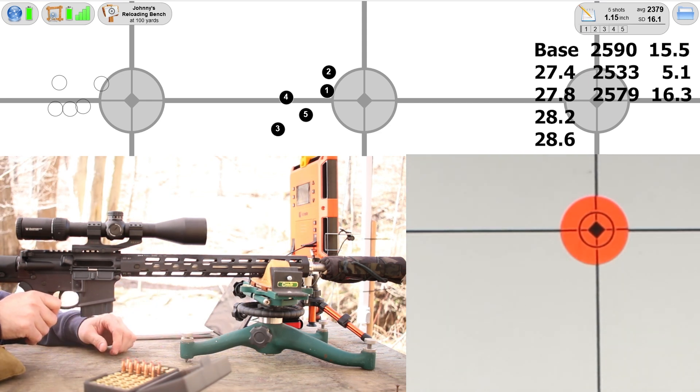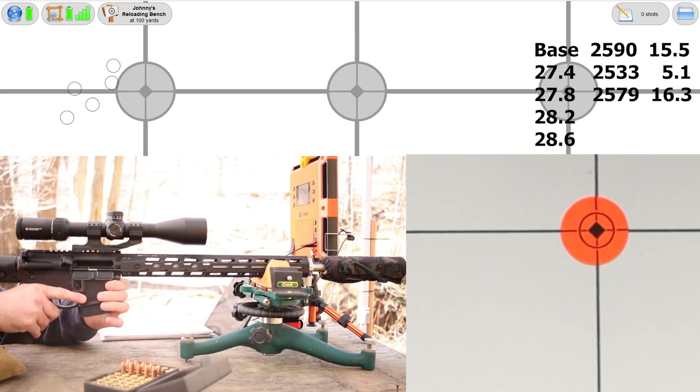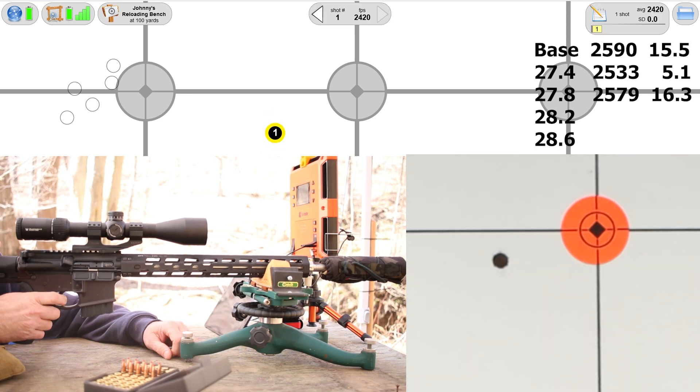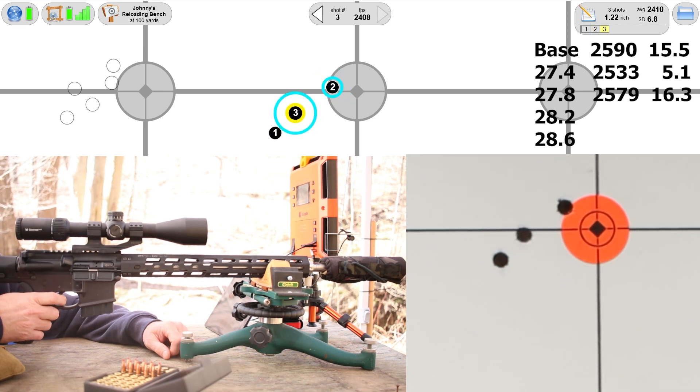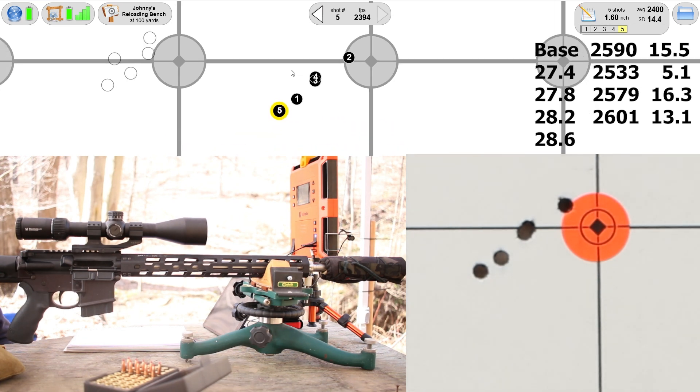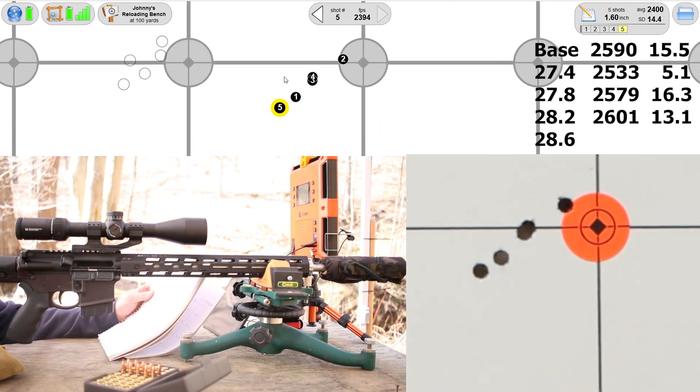28.2 grains. The wheels are kind of coming off here. 1.6 inches, spraying them all over the place. Velocity was 2601, so it didn't pick up as much as I thought. Standard deviation 13.1. The brass damage doesn't seem to be getting any worse, the primers aren't getting any flatter, we haven't pierced any primers.